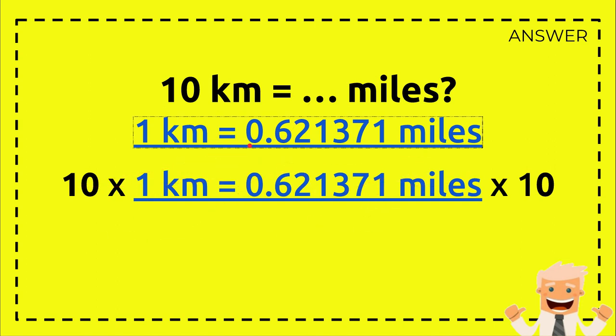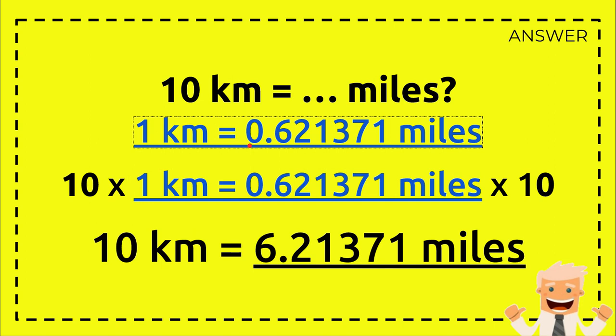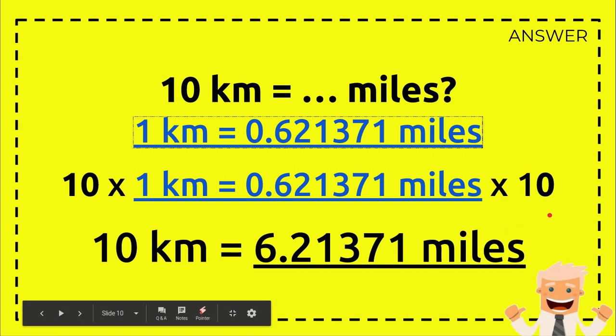So, 10 times 1 km equals 10 km and 0.621371 miles times 10 equals 6.21371 miles. Alright, that's all.